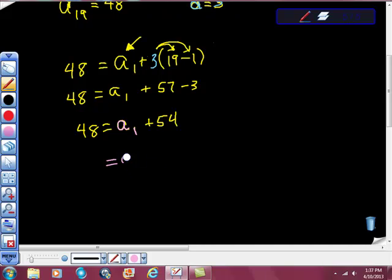I should do it the other way around. Whoever was just thinking that out loud, good for you. If I do this the other way around, I'll add negative 54 to both sides just to make it cleaner. And we'll get that the first term is equal to negative 6.